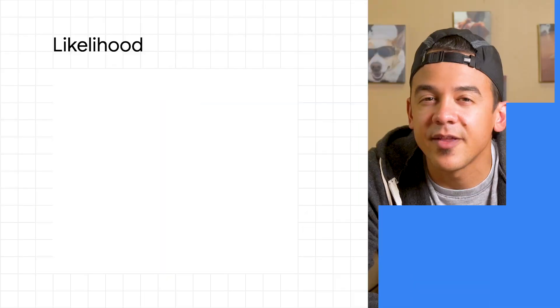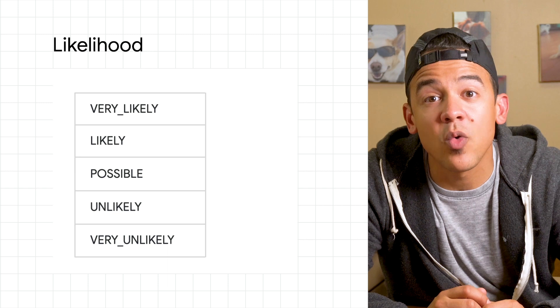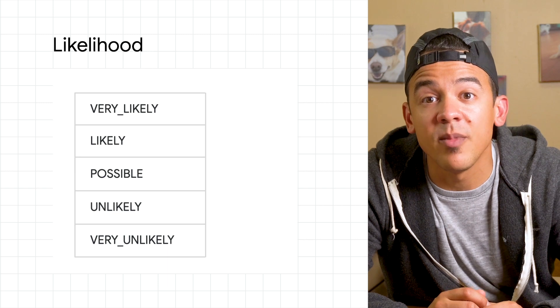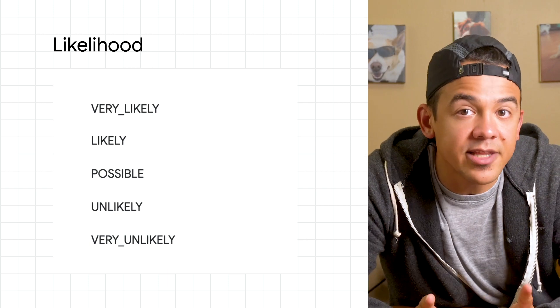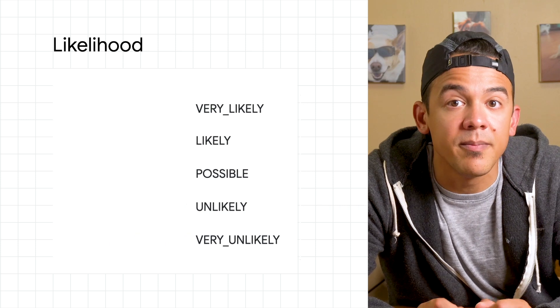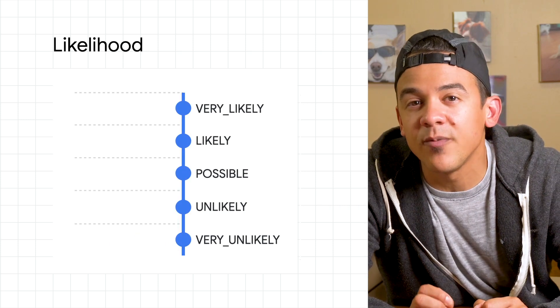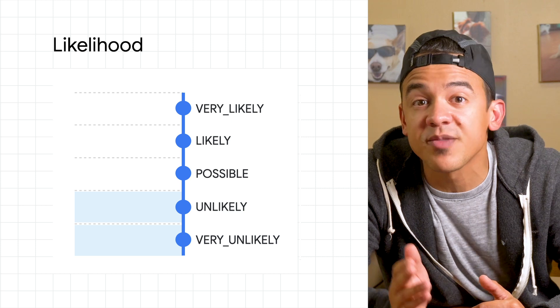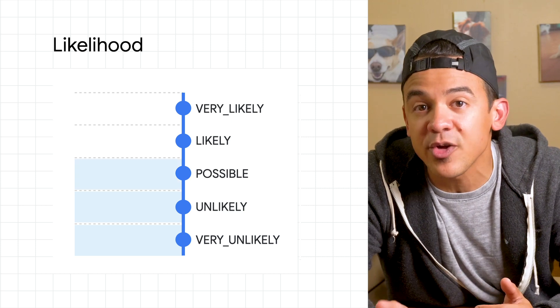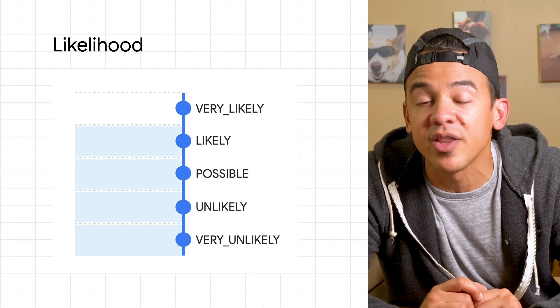When DLP inspects data, the results for any matches include a certainty score that we call the likelihood. The likelihood can be one of five scores that range from very unlikely to very likely. Likelihood is important because it lets you fine-tune the scope of your de-identification and weed out potential false positives by setting a confidence threshold based on likelihood.